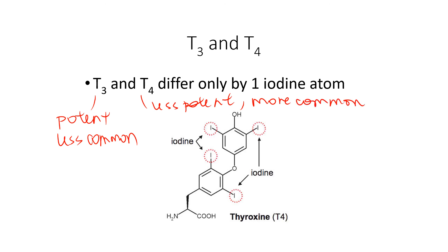Iodine is a major component of these particular hormones. We do get iodine from our diet — from seafood and from foods grown in the soils around our area. There are certain parts of the country, however, that are missing iodine. We'll talk more about goiters and how that's related to iodine in just a bit.